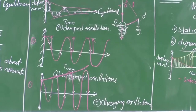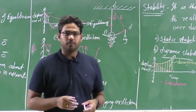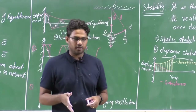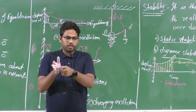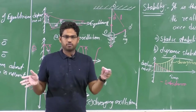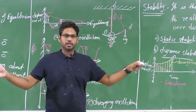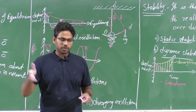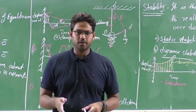Now let us talk about aircraft. When we talk about aircraft, we will try to divide the stability concepts of aircraft into longitudinal stability and lateral-directional stability. To start with, we will talk about longitudinal static stability.